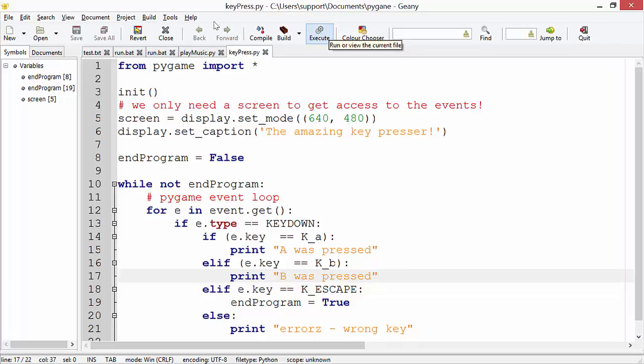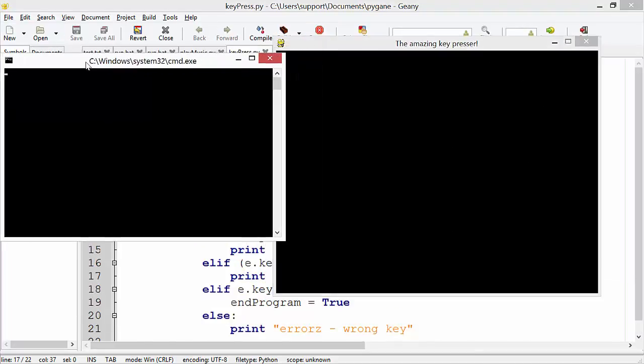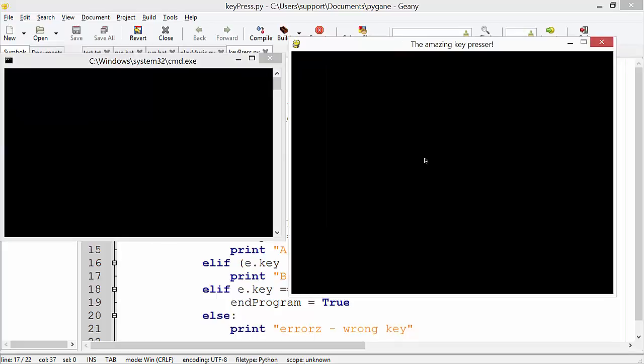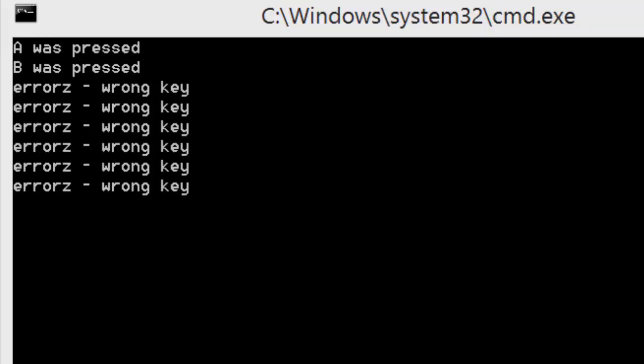So let's actually just see what happens when I execute it. You see two windows open up. Now the idea behind this program is that based on some key presses, if I press the A key on the keyboard, you can see it says A was pressed. Press B, B was pressed. If I press any other key, it gives me an error. And if I press escape key, the program closes.